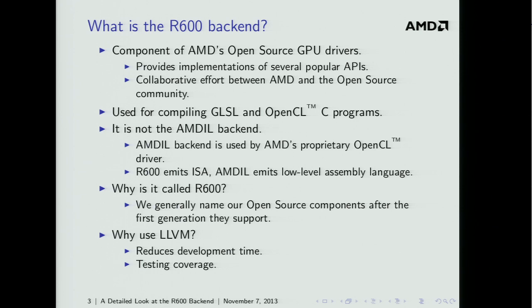Why did AMD choose LLVM? There are lots of reasons, but two really important ones: it reduces our development time — we have a small open source team, so any advantage to speed things up is valuable. The other thing we really like is the testing coverage it gives us. LLVM and Clang are used in lots of different domains by lots of different people, which gives the optimization algorithms really good testing — certainly more testing than we could do on our own.